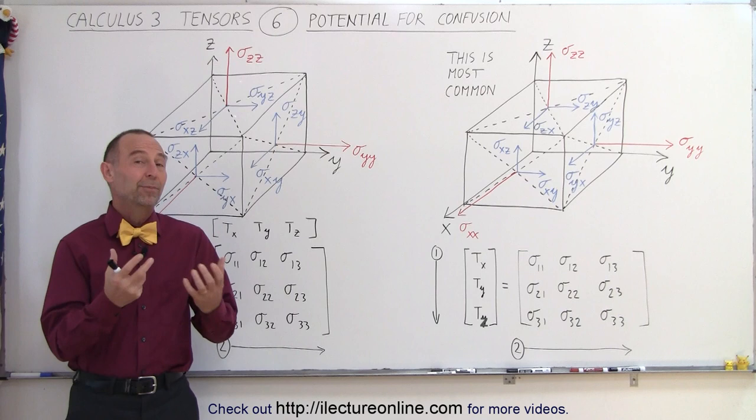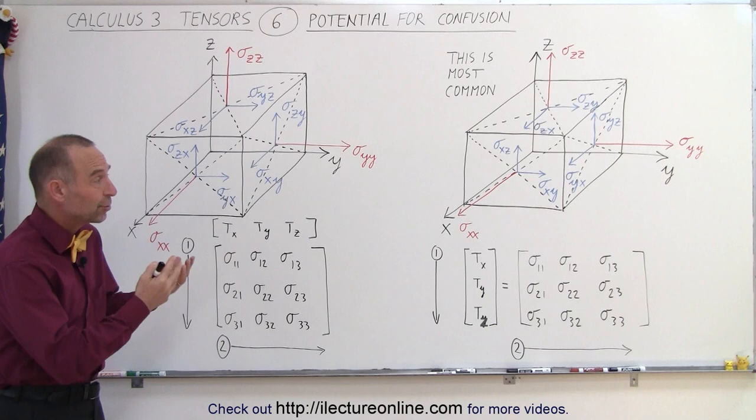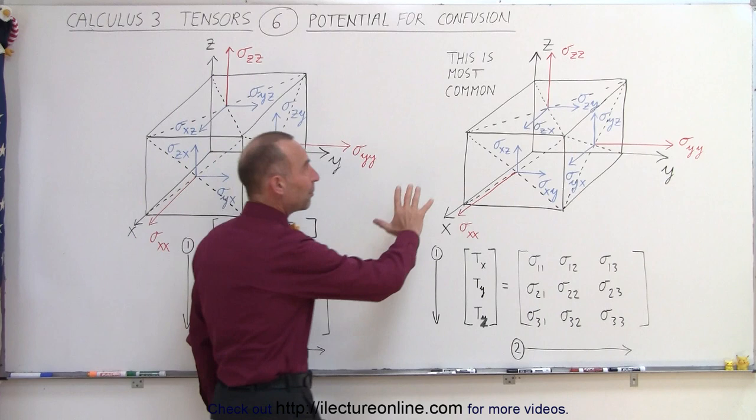For example, a dyad which has nine components — three directions for each of the three faces of, let's say, a cube. Notice that this is the common way in which you will find that these are expressed.